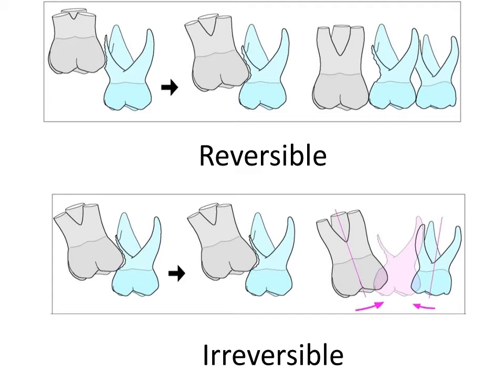In the irreversible type, we see an increase in mesial angulation of the sixth towards the primary tooth, leading to its premature loss.